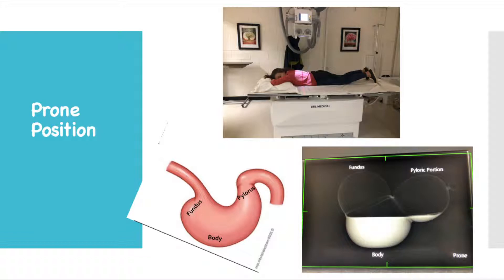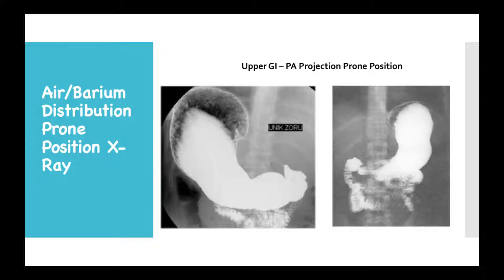In the prone position, the barium is located more within the body since it lies more anterior, and within the pyloric portion of the stomach because it lies more inferior. Therefore, air would be located more in the fundus. The image of the individual lying on the x-ray table is in the prone position and their stomach is positioned similar to the images displayed. The x-ray images shown here demonstrate exactly how the air-barium distribution would look in an actual upper GI exam with the patient in the prone position.